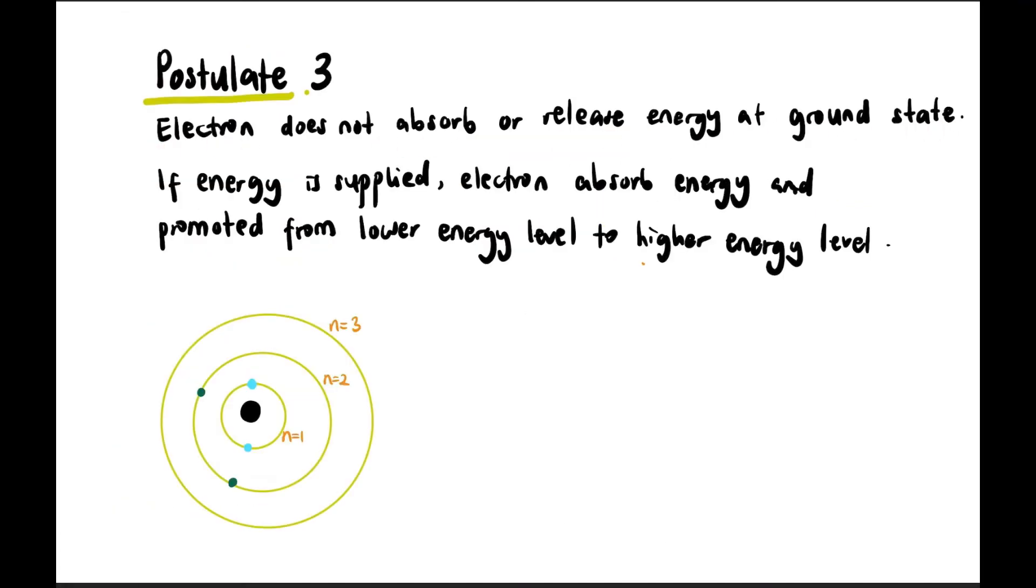Postulate 3: Electrons do not absorb or release energy at ground state. The ground state of an electron can be at n equals one, n equals two, or n equals three, depending on where it's been since the beginning. It's not necessarily at n equals one - it could be at n equals two, three, or four depending on the atom.